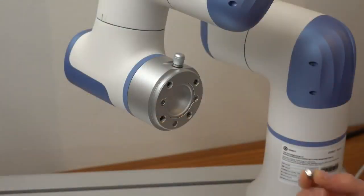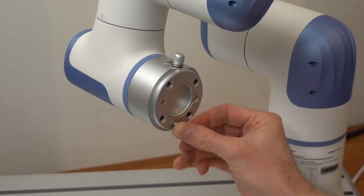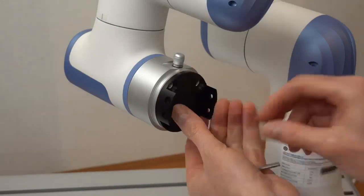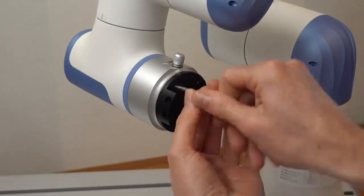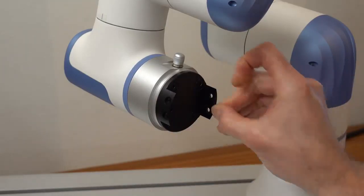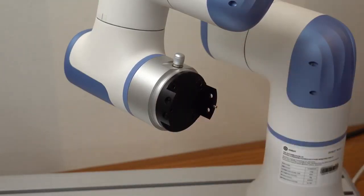A mounting flange at the end of the arm can be used to attach commercially available grippers or an end effector that is made specifically for your application. There is a connection on the side for input and output signals to communicate with the end effector. This is for example used to open or close a gripper.